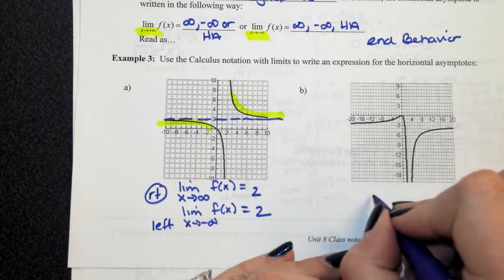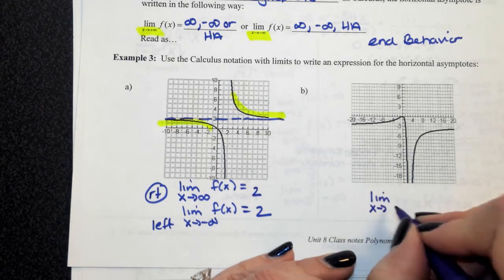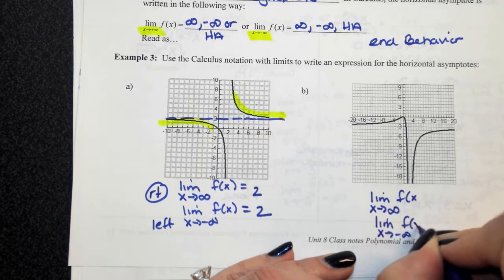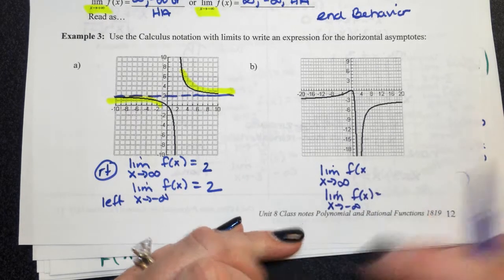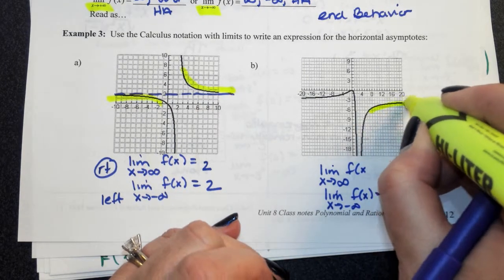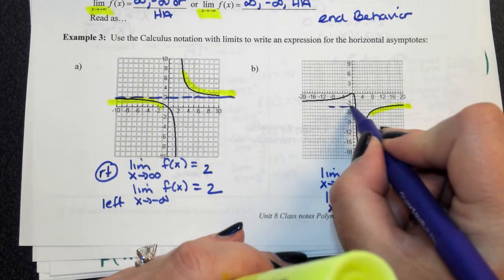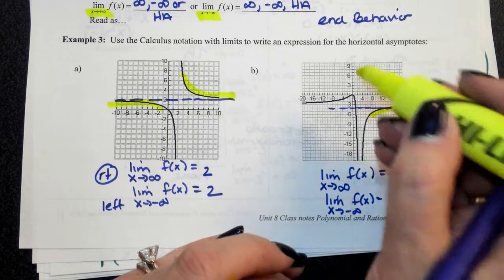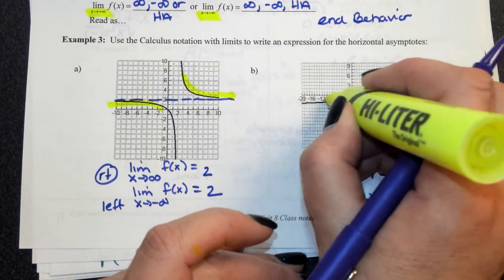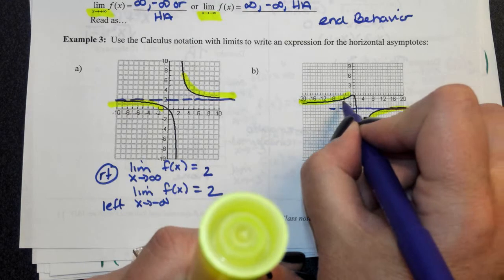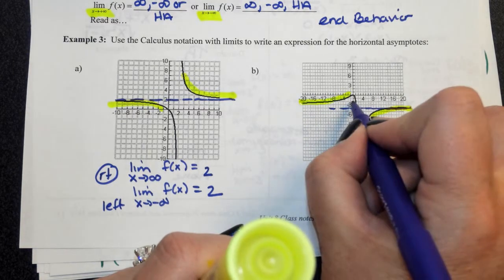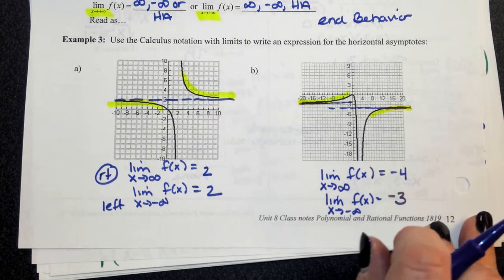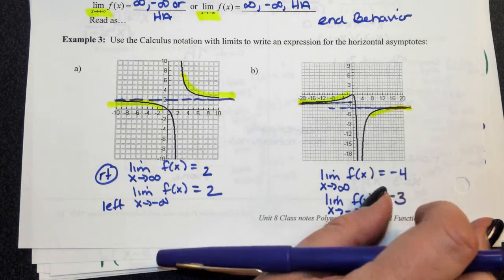It's possible to have more than one horizontal asymptote. For part b, the limit as x approaches positive infinity — looking on the right-hand side, we're getting really close to negative 4. On the left-hand side, the limit as x approaches negative infinity — we're getting really close to negative 3. So you look left and right; it's possible that you could have different things happening.